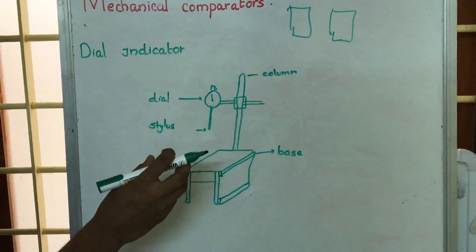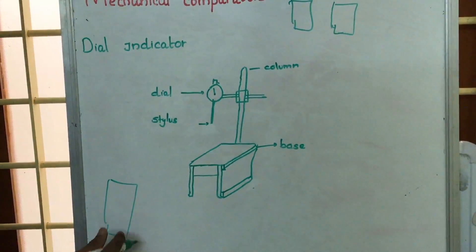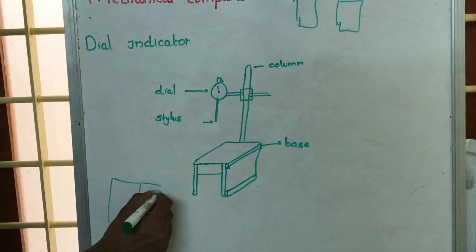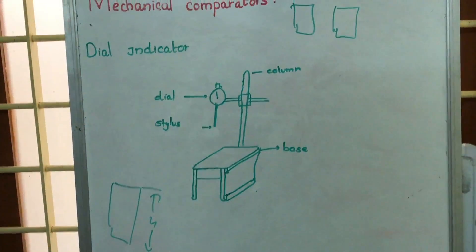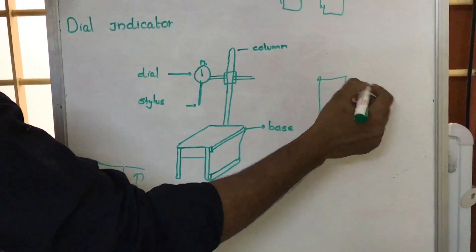So what we do is, suppose say that we are going to measure this particular one. So this particular dimension, h. So what we do is, we will have another one, a reference one whose height will be known.